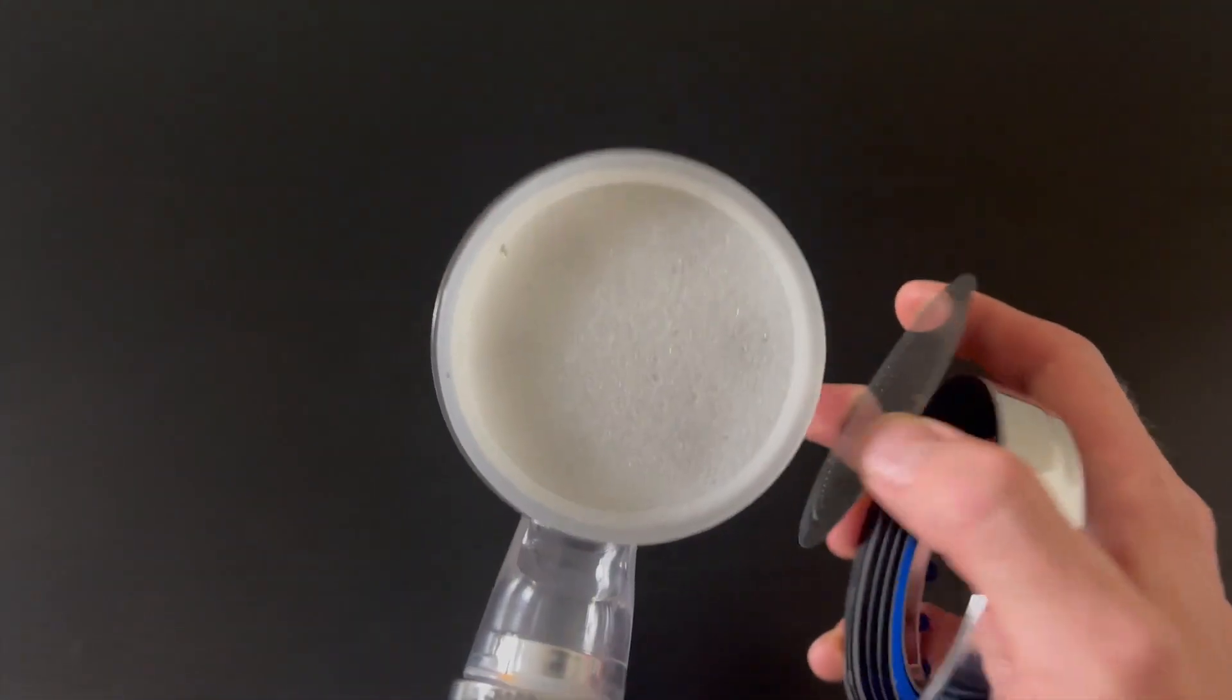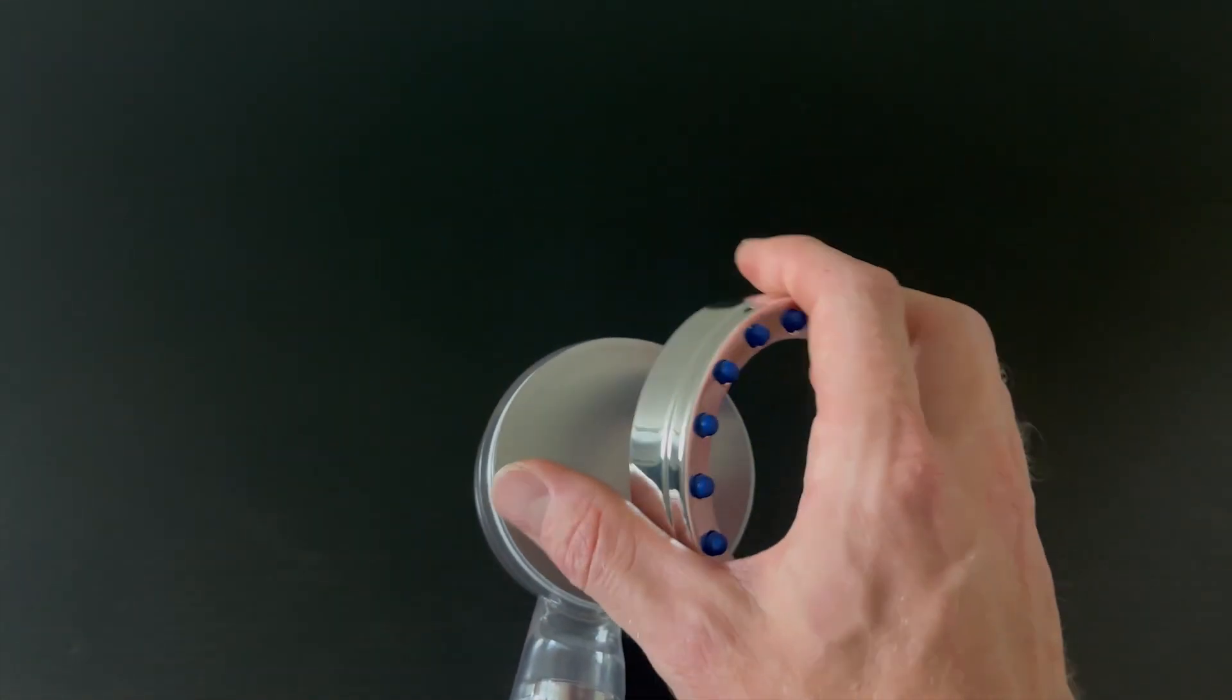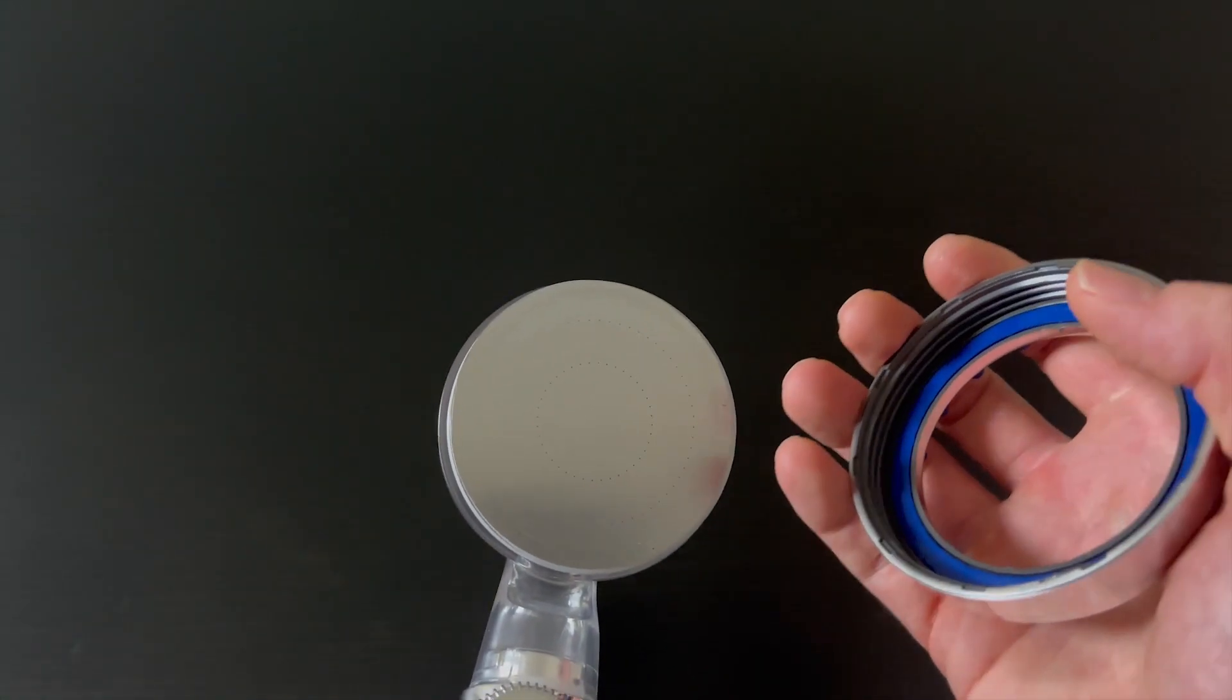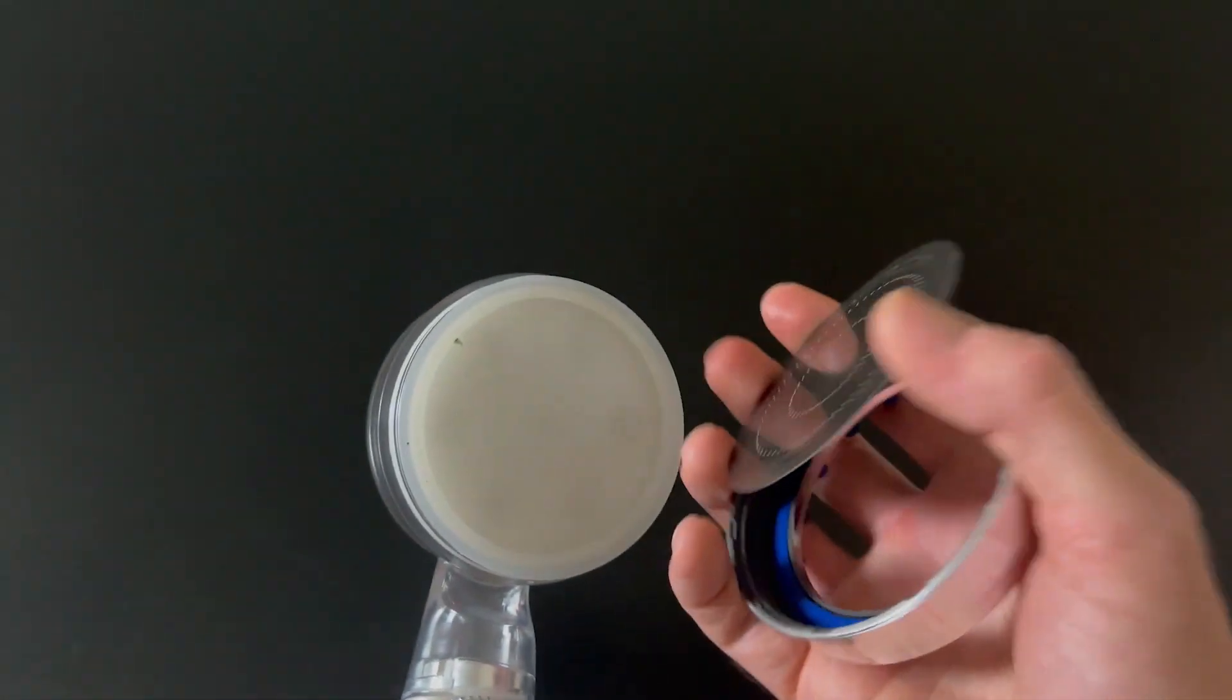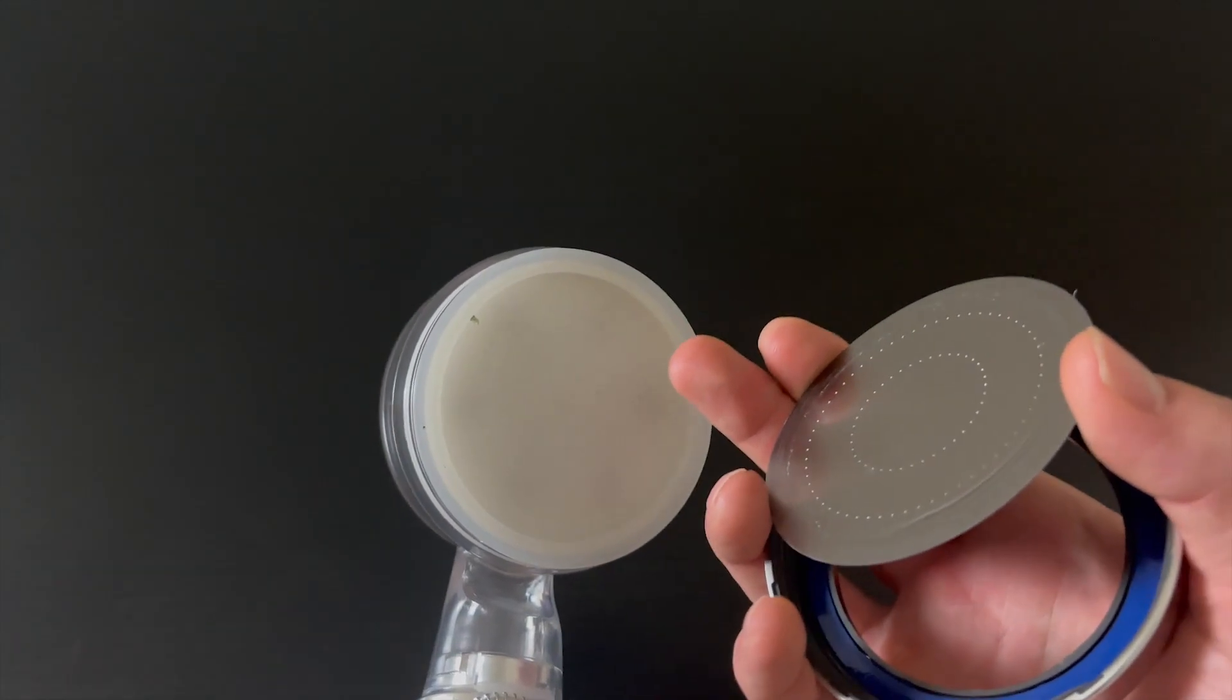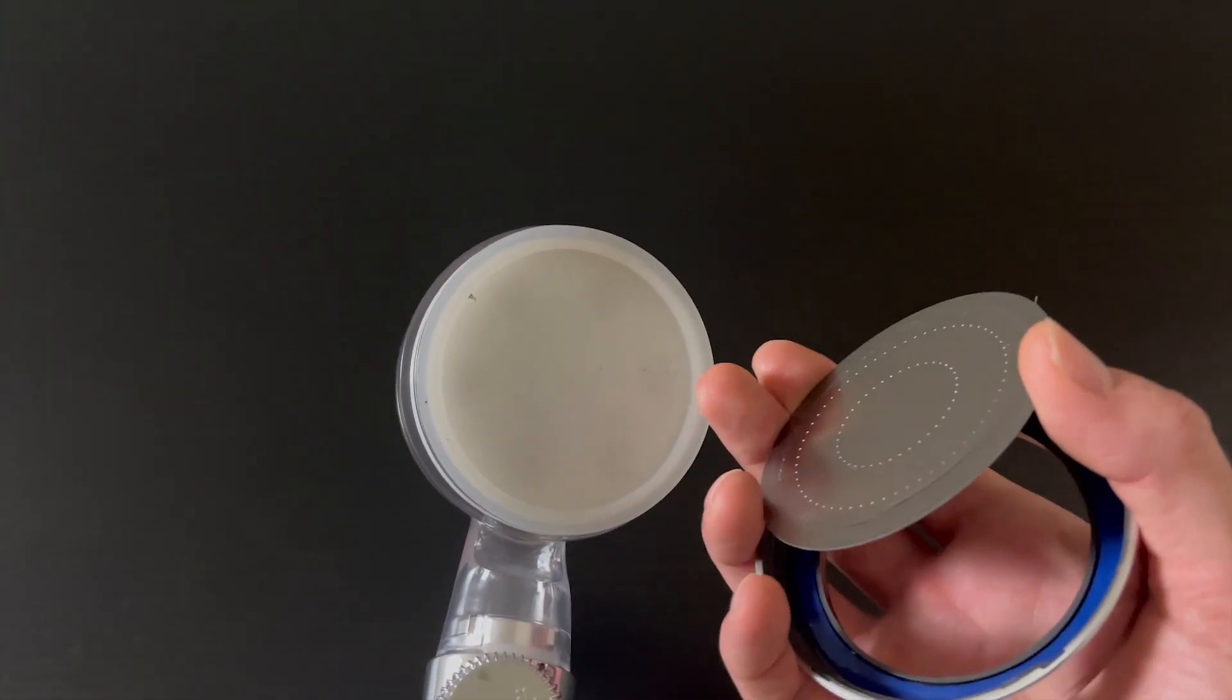Once you need to replace the filter, it's really easy to take off. Also, when you remove the head, you can keep it off and it turns into a spray gun so you can clean your toilet and other places around your bathroom.